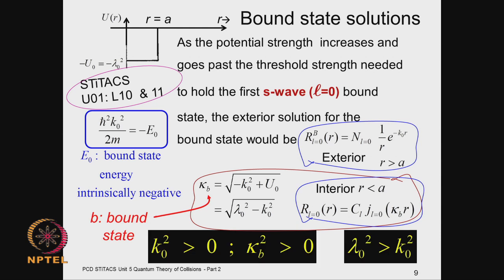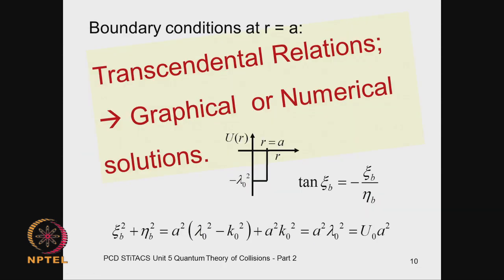These solutions were discussed at length in the previous unit. The bound state solutions were obtained at the intersections of two families of curves — one relating ψ and β, and another which is an equation of a circle. Wherever these two curves intersect we get a solution. Since these are transcendental relations, typically graphical or numerical solutions are obtained.